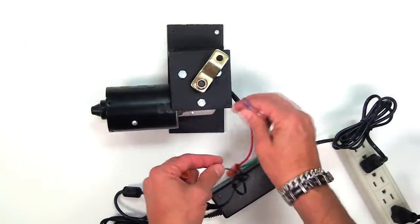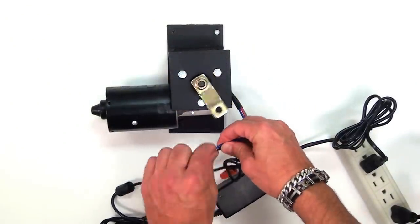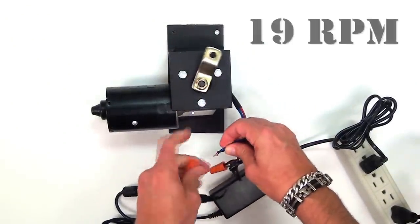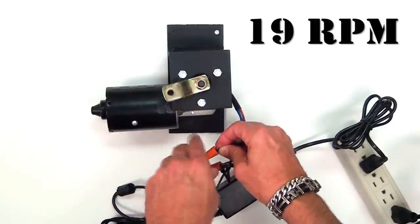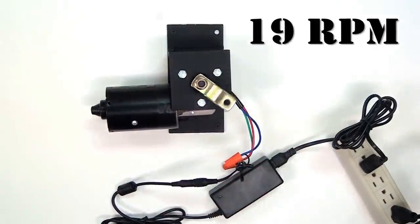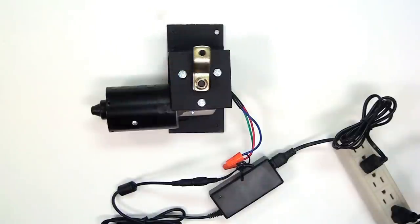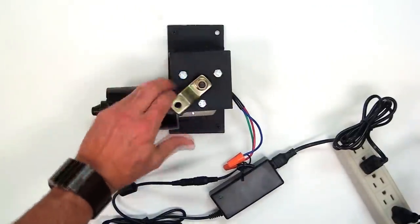Now I'm going to hook up the high-speed wire to the 5-volt, 5-amp power supply. As you can see it runs much slower than the 12-volt, 5-amp power supply and you also lose torque.